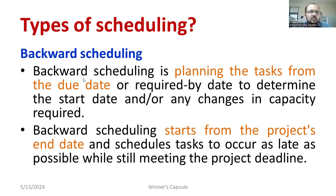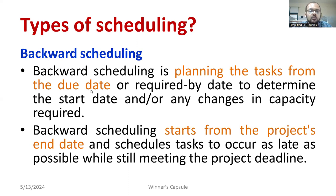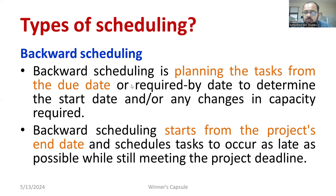In the case of backward scheduling, it is just like reverse engineering. The planning of tasks starts from the due date. You need to know when the project will be delivered — the due date. From the due date back to the beginning date, you schedule day by day to determine the start date. From end to beginning — that is called backward scheduling. We come to know when we are supposed to deliver the project to the client, and from that date backwards, we prepare the schedule.